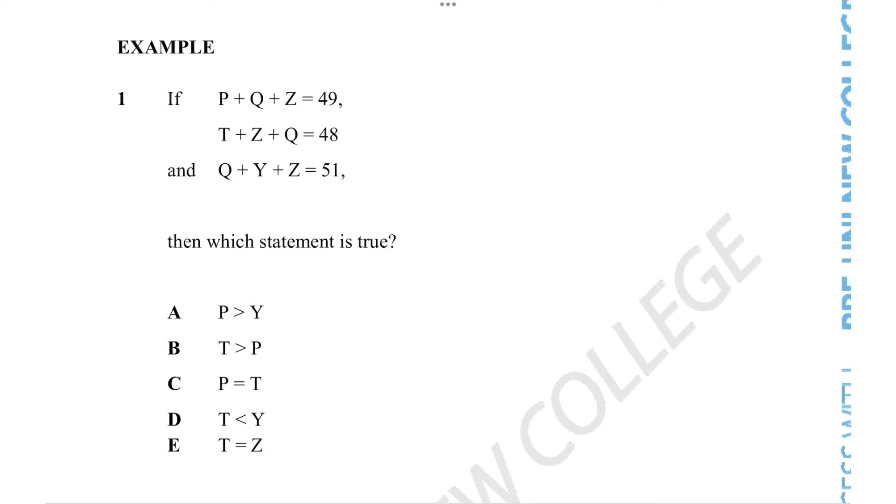We need to first of all realize that we need to understand what these letters represent. If this was an algebra question, it would possibly be that there's enough information to use substitution and figure out what each of these three letters mean. But if you take a look at the information provided, we don't actually have enough information to do that. So then how do we do this question?